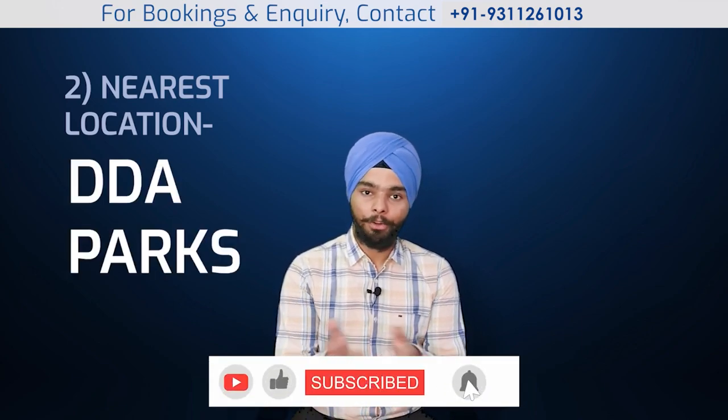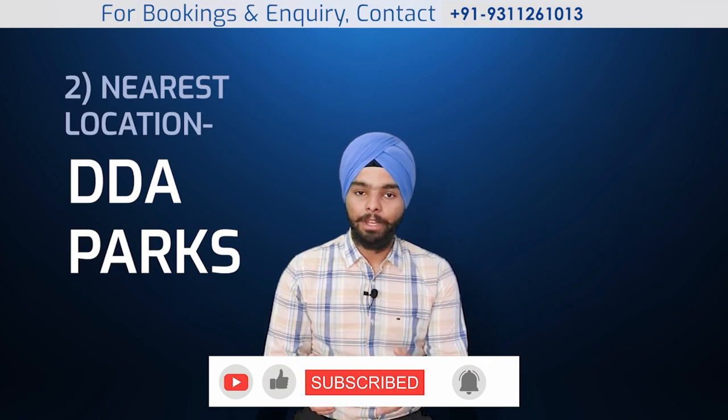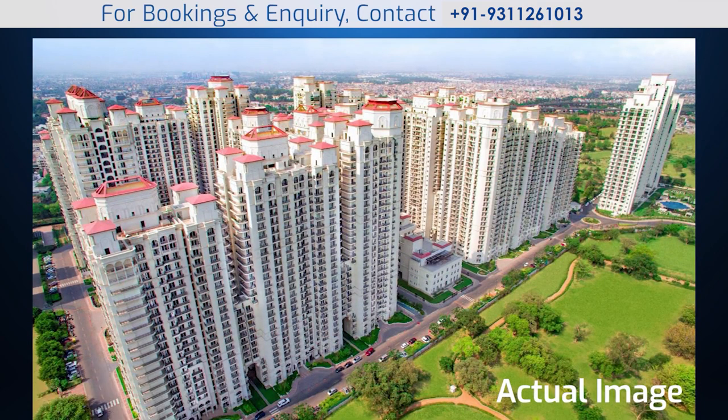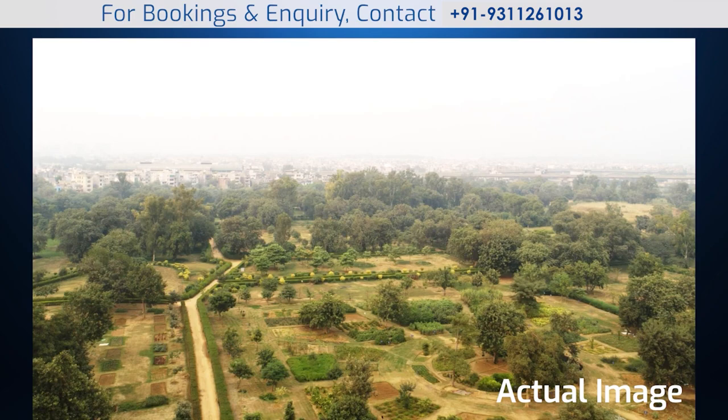The nearest landmark to this project is a DDA Park. On the boundary of this project, there are two DDA Parks — on both sides. It has approximately 120 acres of green area, which is the main USP of this project. DDA and DLF have maintained everything for the coming 65 years. On the East side and South side, there is DDA Park on both sides.